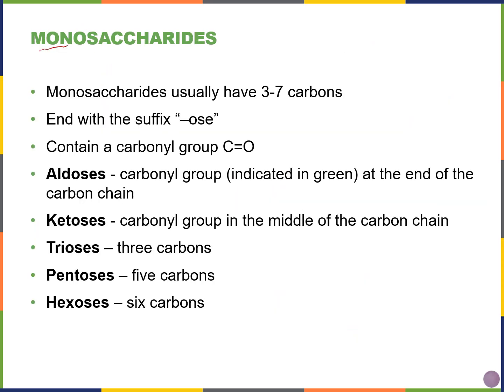Monosaccharides are our first type — a single sugar. They can have a carbon chain length of anywhere from three to seven carbons, and they usually end in '-ose,' like glucose, sucrose, and fructose. This is in contrast to enzymes, which often end in '-ase,' like lactase.